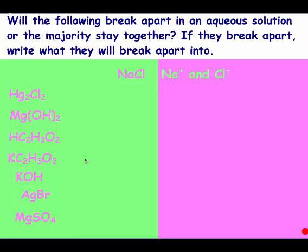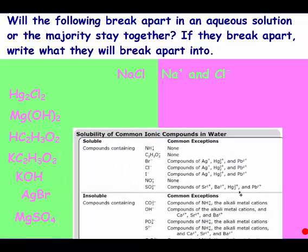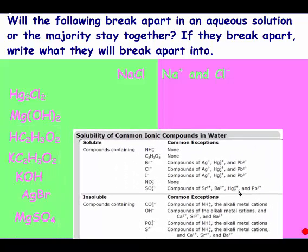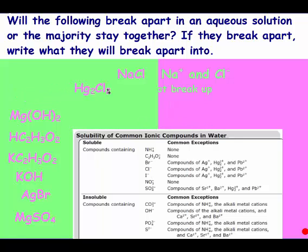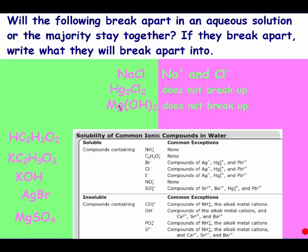The next example: it's not an acid because it doesn't start with hydrogen, and it's not a base because it doesn't end in hydroxide. All chlorides are soluble except silver, mercury, or lead. This is mercury, so it does not break apart. The next one ends in hydroxide, so that's a base. Looking at the periodic table, this is not one of our strong bases, so it does not break up.